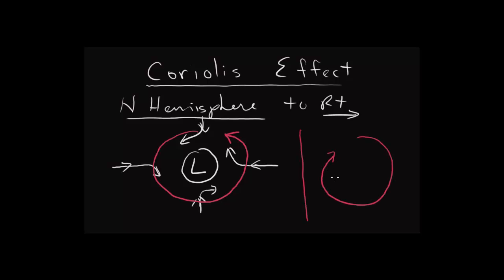Hopefully that cleared some things up. Basically, hurricanes move in a certain way because of the Coriolis Effect, and winds move a certain way because of the Coriolis Effect, and the Coriolis Effect is due to the spin of the Earth. Thanks for watching.